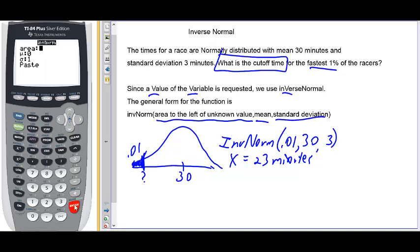And so we're prompted. Area means the area to the left of the unknown value, always. 0.01, down arrow. The mean, that's mu, that's the Greek letter mu, that stands for the mean, that's 30. And there's little sigma, that's the standard deviation, that's 3. Go to paste.